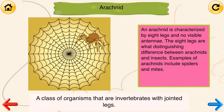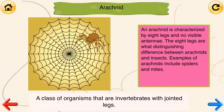Arachnid: a class of organisms that are invertebrates with jointed legs. An arachnid is characterized by eight legs and no visible antennae. The eight legs are what distinguishes the difference between arachnids and insects. Examples of arachnids include spiders and mites.